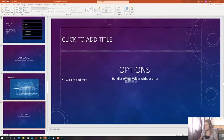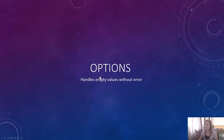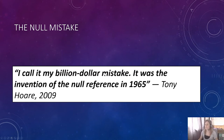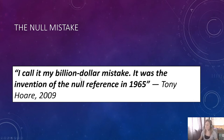Now we're going to look at options. Options handle empty values without error. Let's rewind a little — the null mistake, what I call my billion dollar mistake. The null reference was invented in 1965 by Tony Hoare, and having nulls in programming languages has caused issues over the years — recognised in his own words as a billion dollar mistake. Functional programmers don't believe in nulls. They have ways around it, and one of them in Scala is working with options.